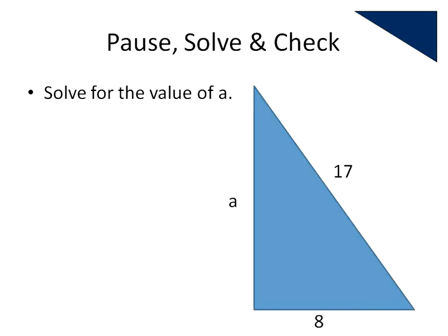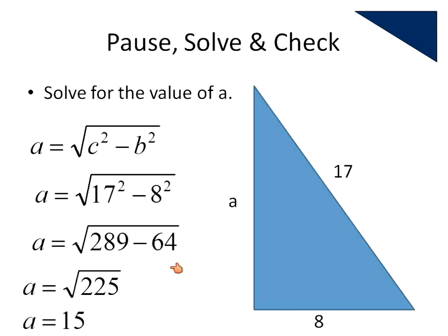One more question in the pause-solve-check. Pause the recording and solve for the value of A, then turn the recording back on to check your work. Here's the work for solving that question. We're using A equals the square root of C squared minus B squared. 17 is our hypotenuse — it's opposite the right angle, so that's our C value. 17 squared is 289, minus 8 squared which is 64. 289 minus 64 gives us 225, and that 225 seems to be coming up a lot today. Our A value is 15.